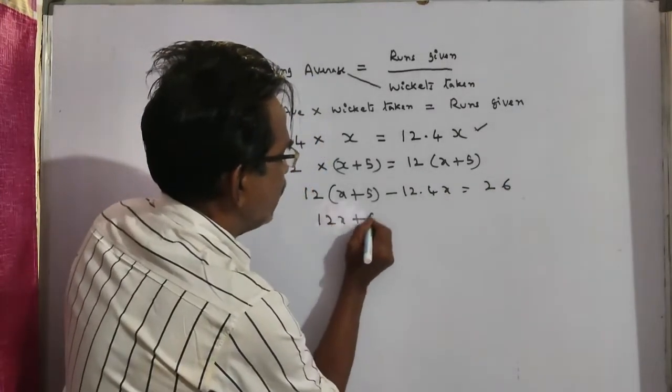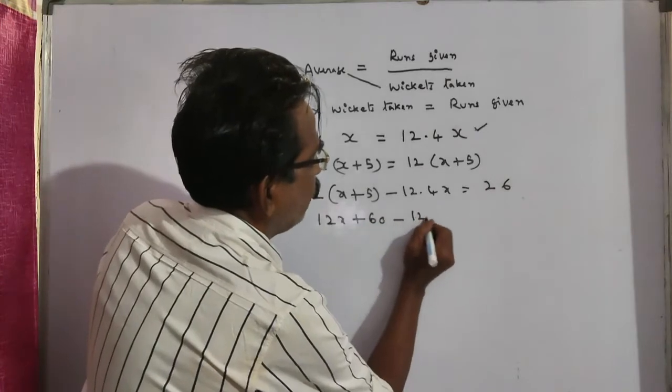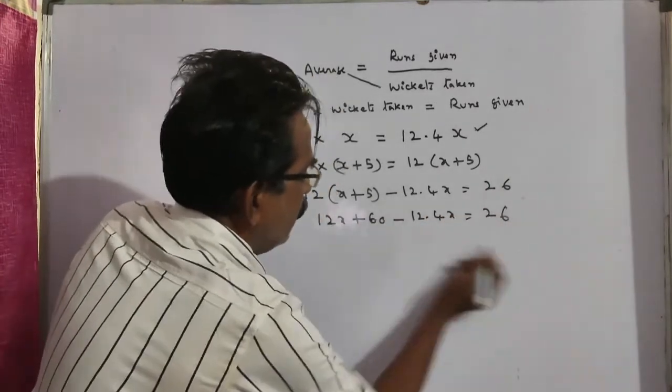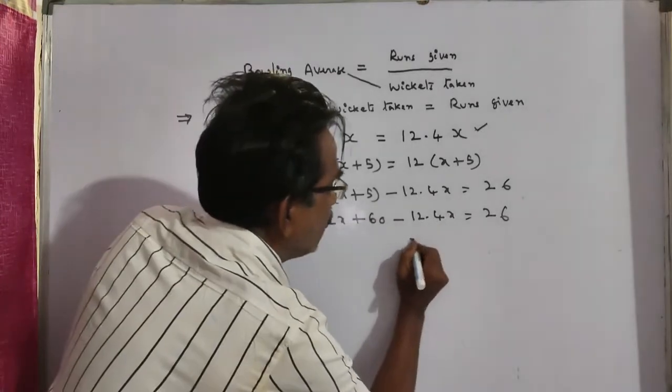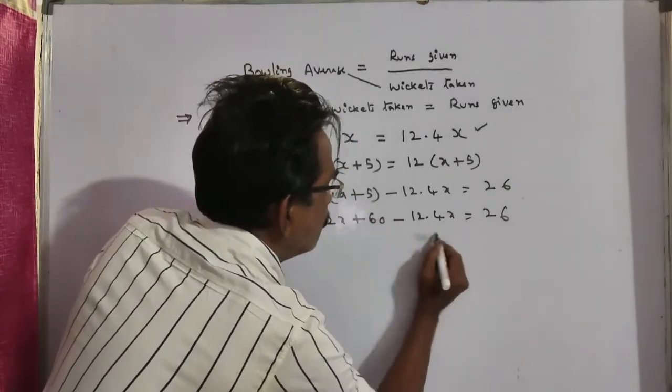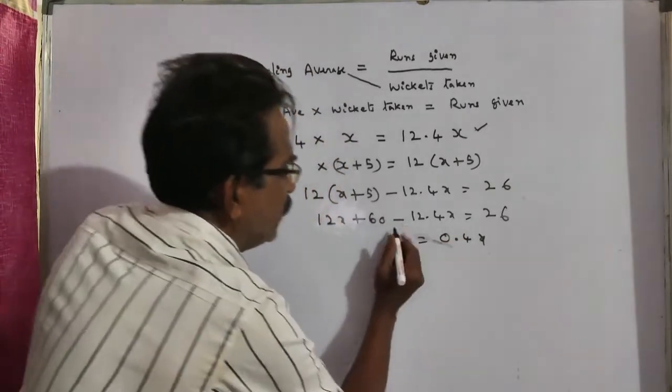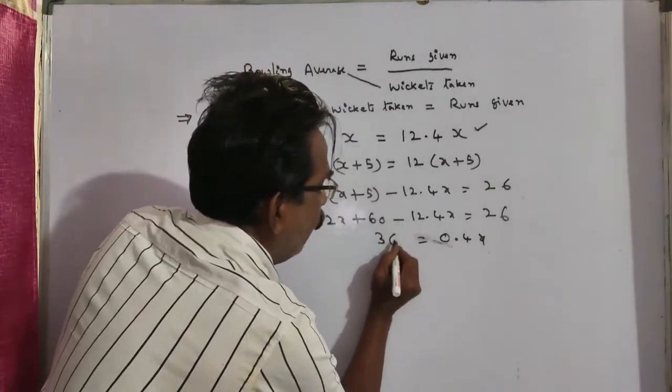12 x plus 60. Minus 12.4 x is equal to 26. So, 12 minus 12.4 that is equal to negative 0.4 x. 0.4 x is equal to 60 minus 26. 34.